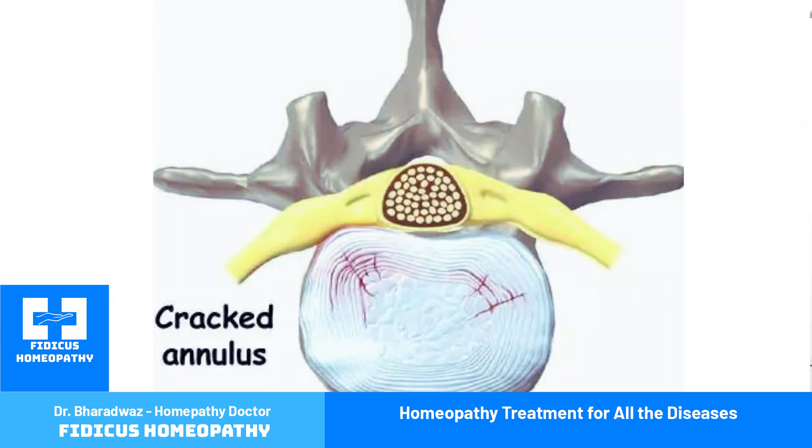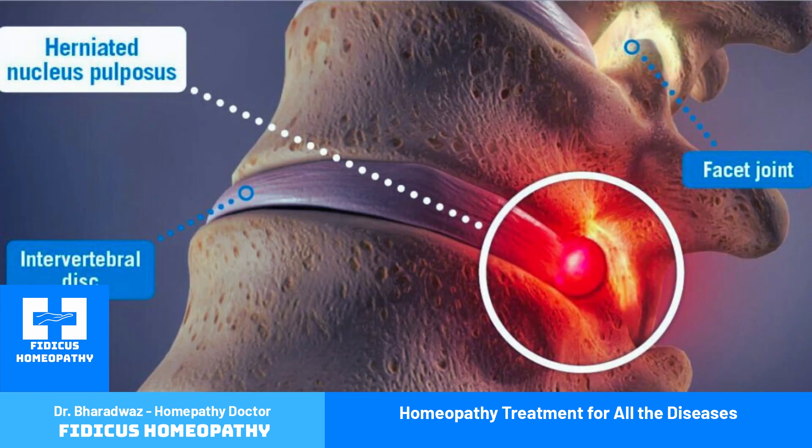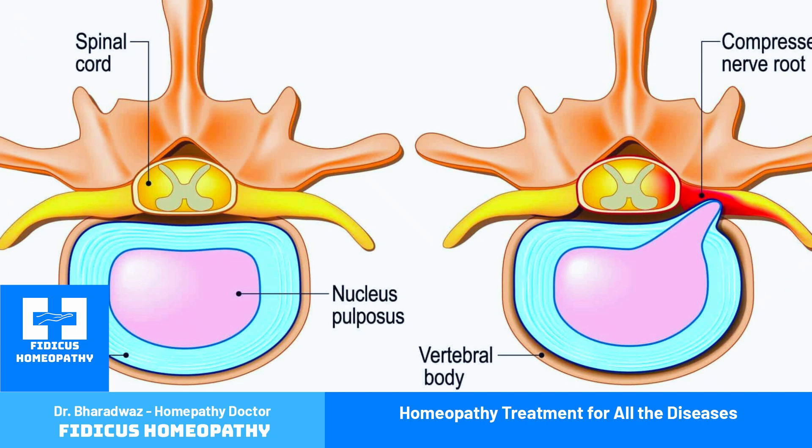In the intervertebral disc, there can be dehydration of the intervertebral disc — there is lots of fluid in the disc, and loss of this fluid is known as desiccation. The intervertebral disc becomes thin and its height is reduced. There can be cracks in the outer part of the disc known as annulus fibrosus. The inner gelatinous part of the intervertebral disc can come out, and this is known as herniation. This damaged intervertebral disc can put compression on the spinal cord itself, or it can put pressure on the nerve roots coming out from the intervertebral foramen.